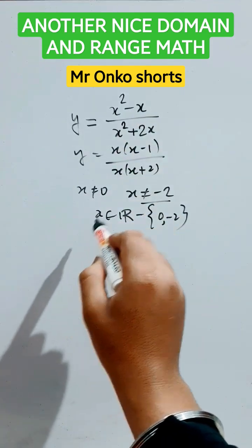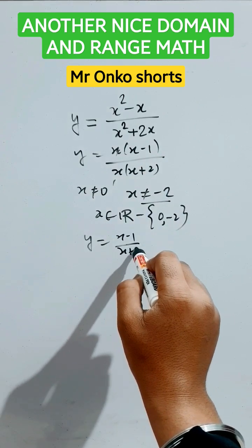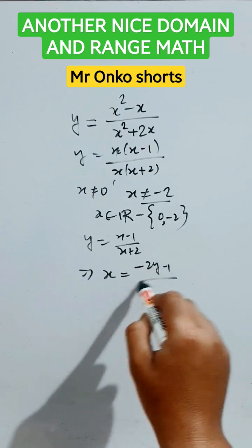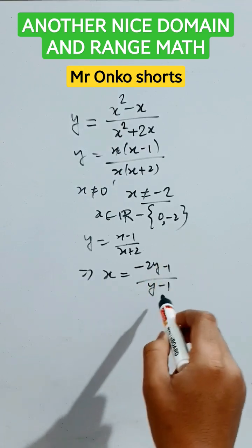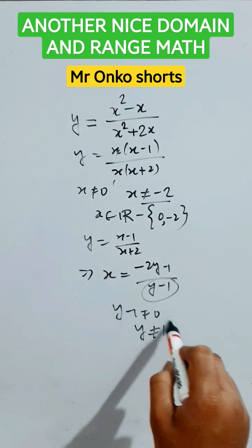Now for the range part, we have to assume y is equal to x will be gone. So it is x minus 1 over x plus 2. So on simplifying that we will get x equals to minus 2y minus 1 divided by y minus 1. So here y minus 1 can't be equals to 0. So y can't be equals to 1.